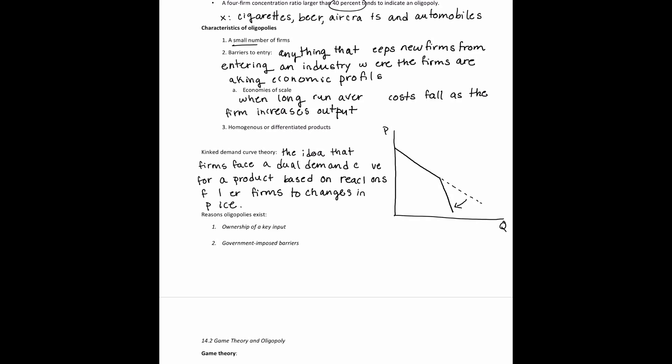There are a couple more reasons why oligopolies exist. One is ownership of a key input — if control of a key input, such as natural resources or minerals, is held by one or a small number of firms, it's difficult for additional firms to enter. Another reason is government-imposed barriers, where governments may grant exclusive rights to a certain industry. Examples include occupational licensing and patents.